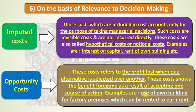For example, consider an owner who has a building — they can either rent it out to earn rent income, or use it as factory premises. If they choose to rent it out, they need another building for the factory, incurring additional cost. If they use it as factory premises, they forgo the rent income. The profit or benefit forgone by choosing one option over the other is the opportunity cost.